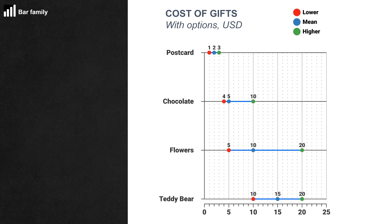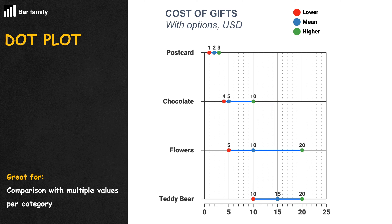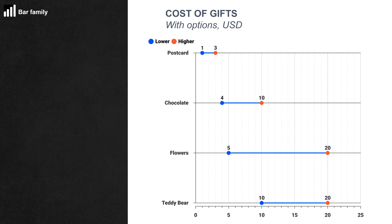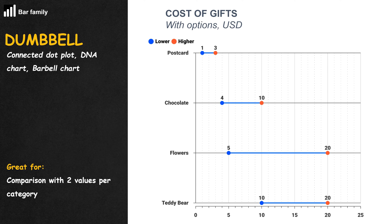When a lollipop has more than one candy, we have a dot plot. When a dot plot only has two candies, it becomes something more masculine — the dumbbell chart.